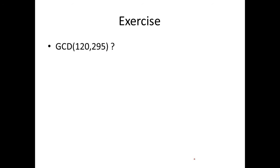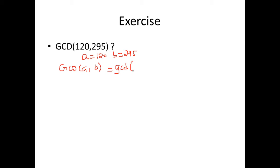This is how you use the Euclidean algorithm to find the greatest common divisor. Let's take another example. Please go ahead and compute the GCD for these two values. Here A is 120 and B is 295. GCD of A, B is nothing but GCD of B — that is 295 — comma A mod B, which is 120 mod 295.